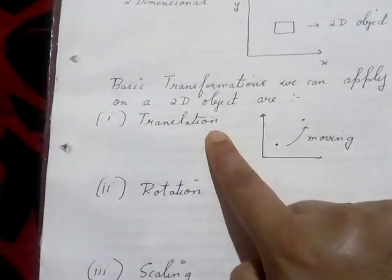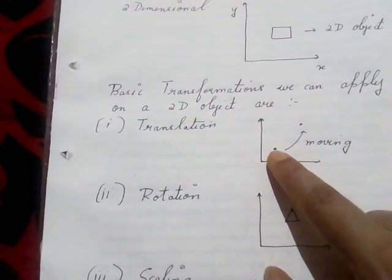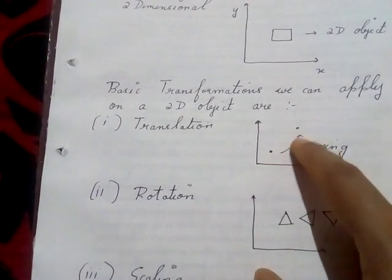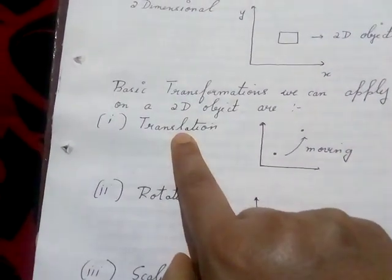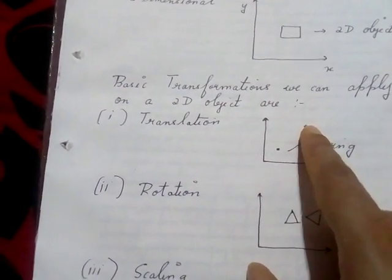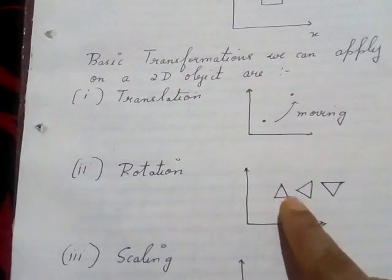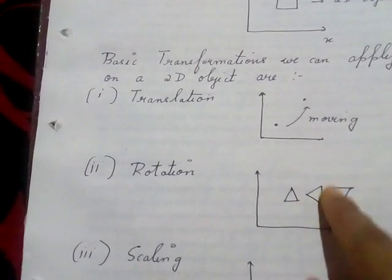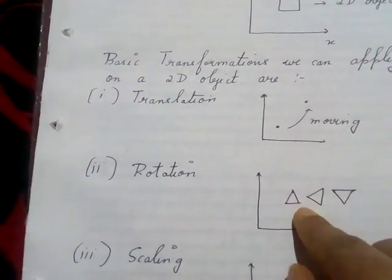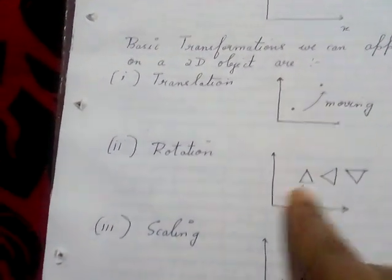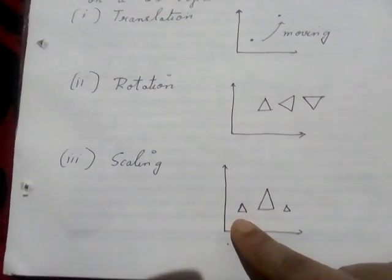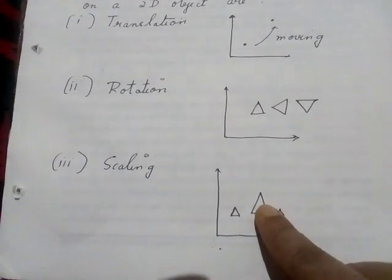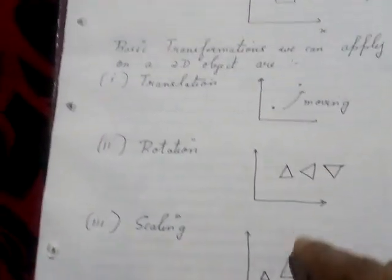Translation means you have a point and you are moving it from one coordinate position to another coordinate position — changing an old position to a new position. Rotation means you have an object and you rotate it to 90 degrees, 45 degrees, or 180 degrees, either clockwise or anti-clockwise. Scaling means you have an object and you either increase it or decrease it — scaling is nothing but increasing or decreasing the size of an object.